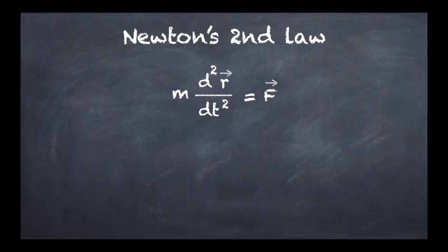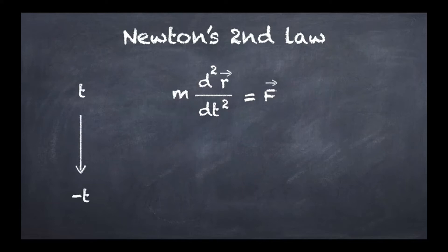As usual, please be reminded that if you apply Newton's second law, you need to be in a given inertial frame, which is where the second law actually makes sense. Once this is noted, we can move on with this analysis. What we are going to look at is applying a transformation that changes t into minus t, and first we want to evaluate how the left-hand side is going to change upon this transformation.